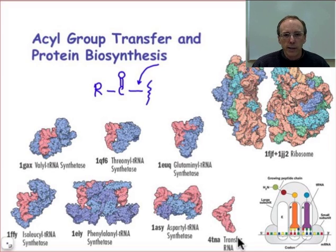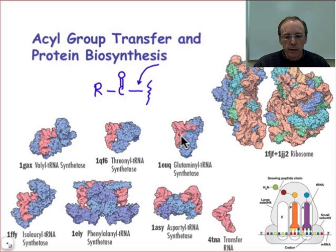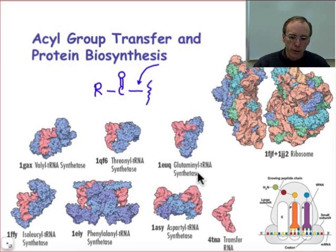Also involved are transfer RNAs, which carry the amino acids around. The transfer RNAs are acylated with an amino acid carboxylic acid functionality, and the acylation reaction takes place by the synthetase enzymes. Here we see, for example, the glutaminyl transfer RNA, which carries around glutamine. Notice that the tRNA, colored here in pink, is bound to the protein — the synthetase — which is the enzyme that acylates, or in other words, puts on the carboxylic acid group of the glutamine amino acid.